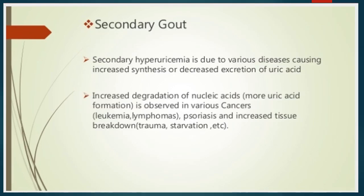Secondary gout is caused by increased synthesis or decreased excretion of uric acid. Increased degradation of nucleic acids is observed in various cancers like leukemia, lymphomas, psoriasis, and from increased tissue breakdown such as trauma and starvation.